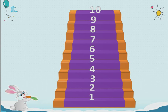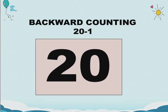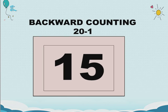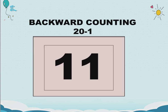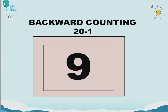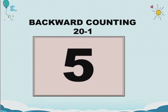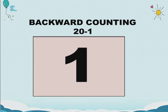Very good! You will learn forward counting and backward counting. Now you all know numbers 1 to 20, so now we will do backward counting from 20 to 1. Are you all ready? Let's go! 20, 19, 18, 17, 16, 15, 14, 13, 12, 11, 10, 9, 8, 7, 6, 5, 4, 3, 2, 1!